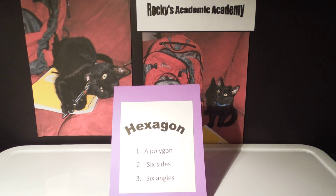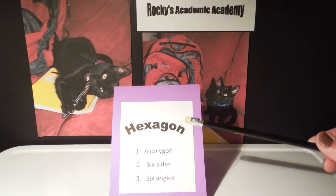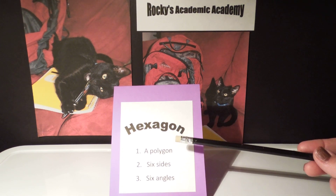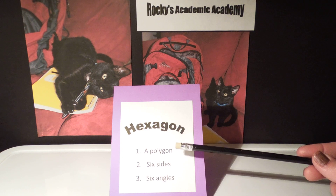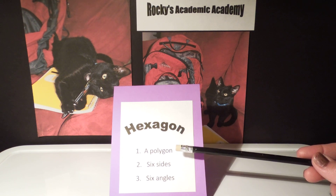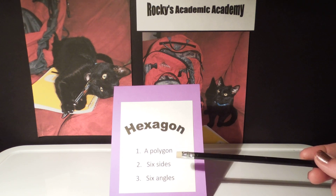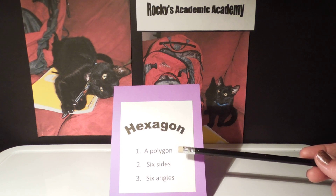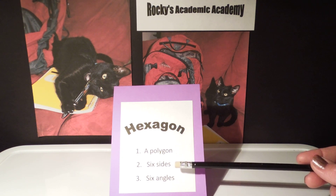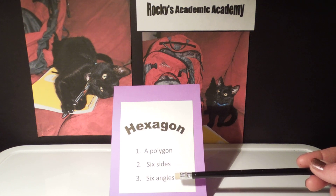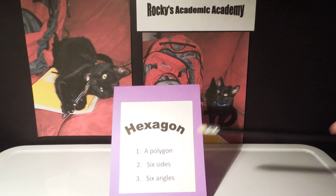Now, a hexagon is considered a polygon. A polygon is a closed figure with three or more sides. A hexagon is a closed figure — it has 6 sides and it has 6 angles.